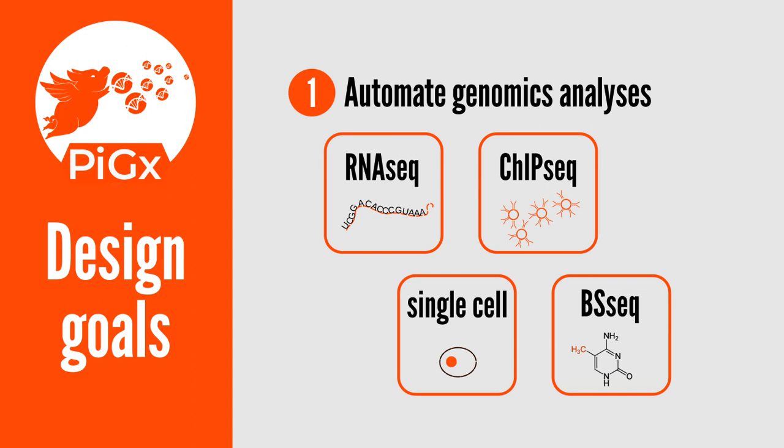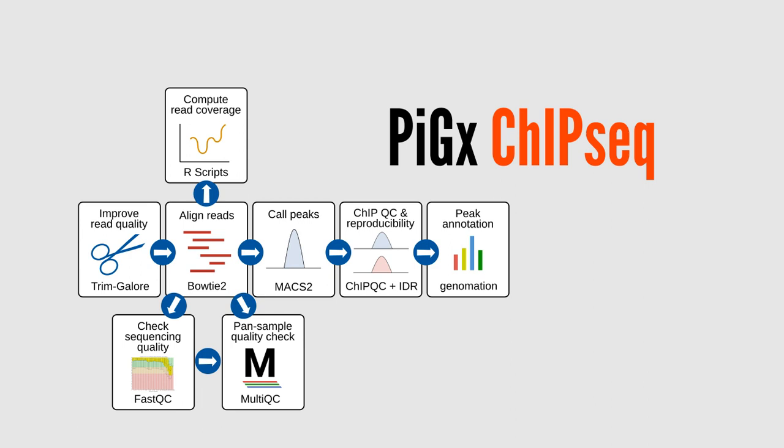Under the hood, the pipelines connect proven bioinformatics tools with the help of a workflow scheduler called SnakeMake. Here is a simplified workflow diagram for one of the pipelines that processes chip-seq datasets. On the left you see a preprocessing step where the read quality is improved by trimming. Next, the reads are aligned to a reference. After that, quality metrics are computed with FastQC, MultiQC, and a few R scripts using packages from Bioconductor and CRAN. Other steps include peak calling, quality control, and peak annotation.